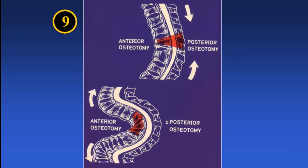Slide 9 shows two possible ways of correcting a kyphosis. In the top half is correction by a closing posterior osteotomy. In the lower half is an opening anterior osteotomy. Posterior closing osteotomy is efficient and relatively simple in round kyphosis, but it does not work in angular kyphosis.